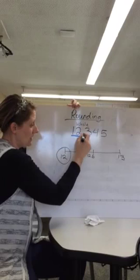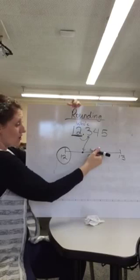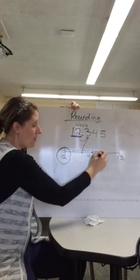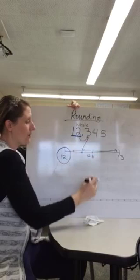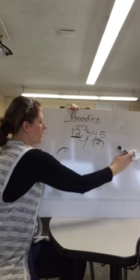Instead of drawing a number line, I can always look at my very next place value. If it's less than 5, I know it's going to be on this side of the number line, so it's going to be closer to 12. If it's 5 or more, I know it's closer to the next whole number, so it would be 13. So 12 and 345 thousandths rounded to the nearest whole number is 12.